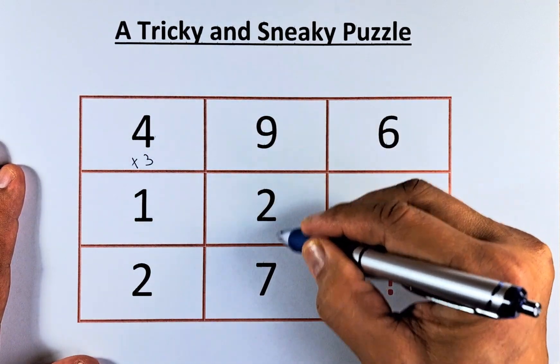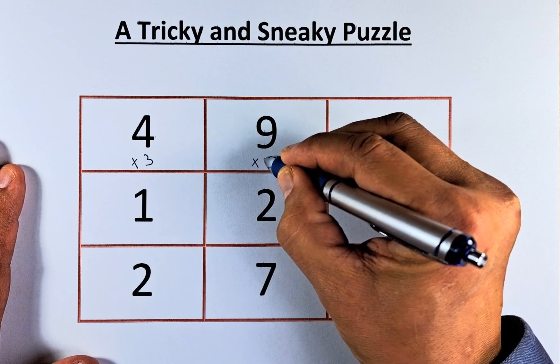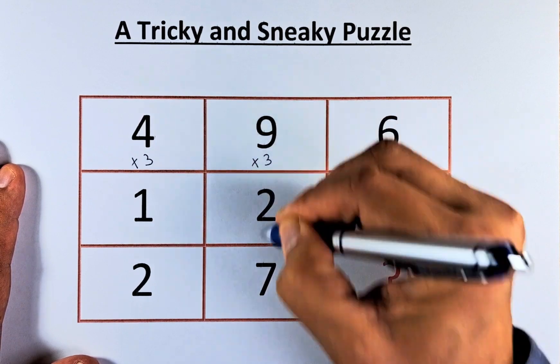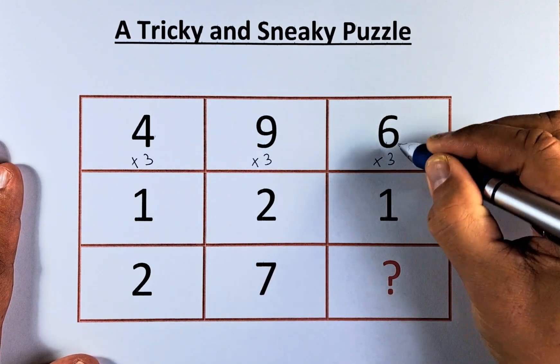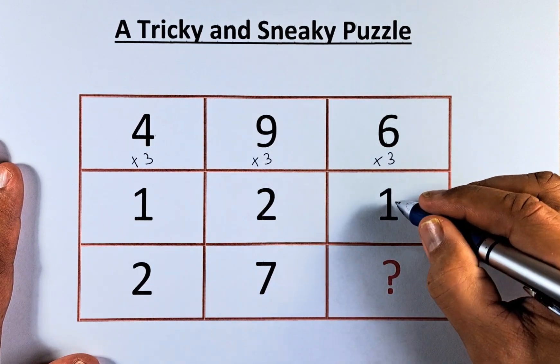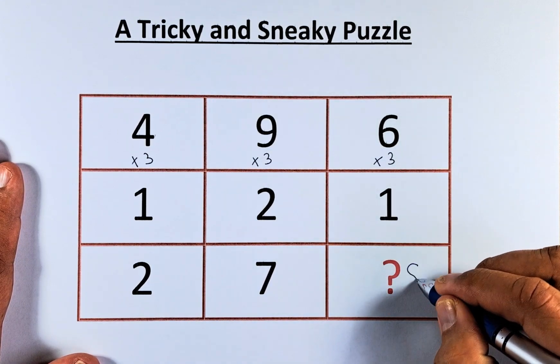Similarly, to get 27, you multiply 9 by 3. 9 times 3 is 27. So the sneaky part is that to get to what number from 6, you multiply by 3. 6 times 3 is 18, so 1 and the question mark has to equal 18, meaning the answer is 8.